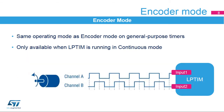The low-power timer features an encoder mode function that can interface with incremental quadrature encoder sensors using the peripheral's INPUT1 and INPUT2 inputs. Both inputs feature glitch-filtering circuitry. The encoder function is similar to the one embedded in the general-purpose timers. In order to use the encoder mode function, the low-power timer must be running in continuous mode. Note that only low-power timers 1 and 2 embed the encoder mode function.